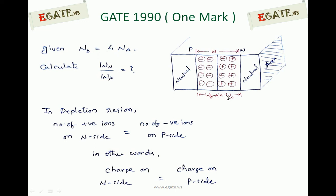A PN junction is formed with the help of positive ions on the N side and negative ions on the P side near the junction. On the other sides, the P side and N side are neutral. This is the depletion region where positive and negative ions accumulate near the junction. The number of positive ions on the N side equals the number of negative ions on the P side.